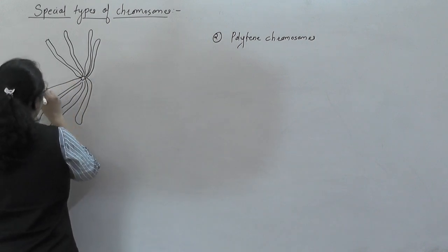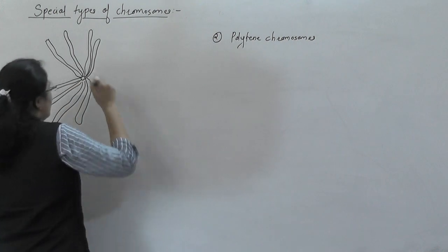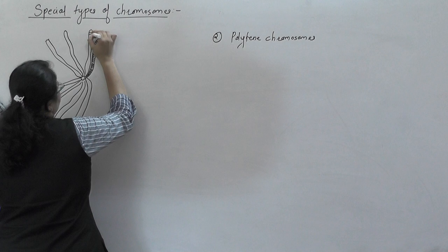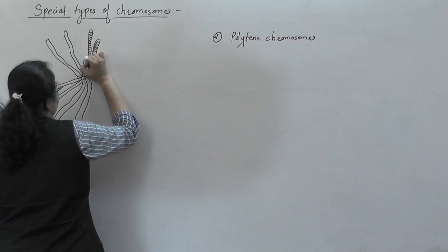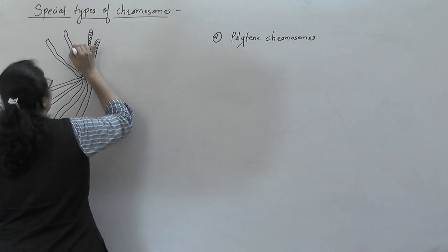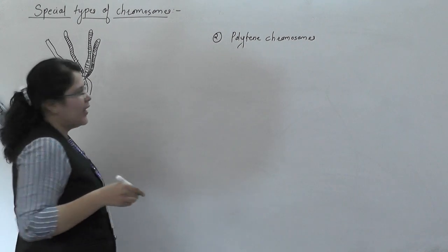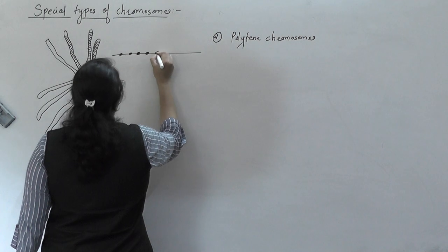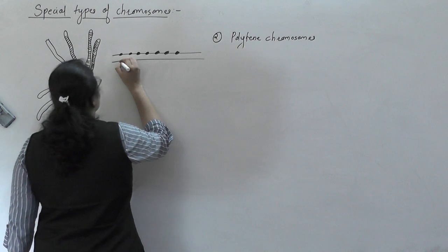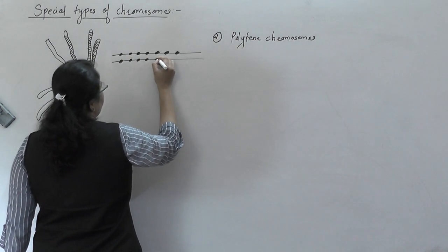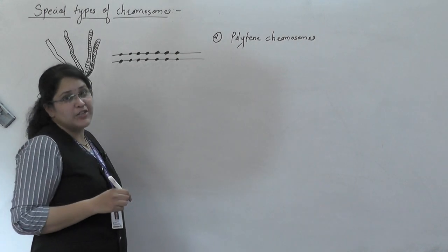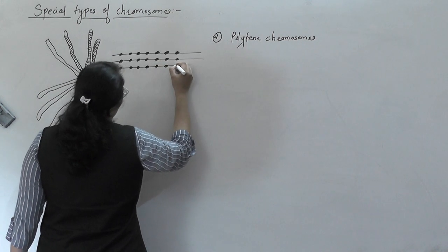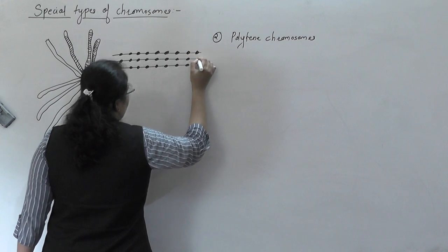When you observe externally, you can find some striations or banding on it. These bands are formed because the chromomeres are arranged in parallel. Their parallel arrangement gives rise to a striated or banded pattern. So if we enlarge a portion, we see that the arrangement of chromomeres in parallel gives rise to this banded pattern on the polytene chromosome.